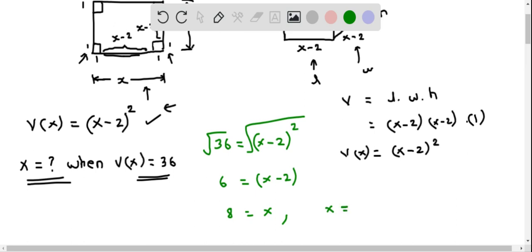So we have determined that x equals 8. That is, the square sheet of metal should be of side length 8 feet, so that we can make a box with a volume of 36 cubic feet.